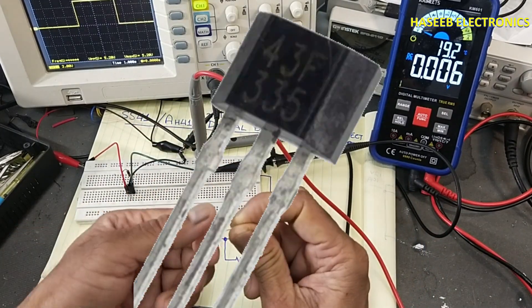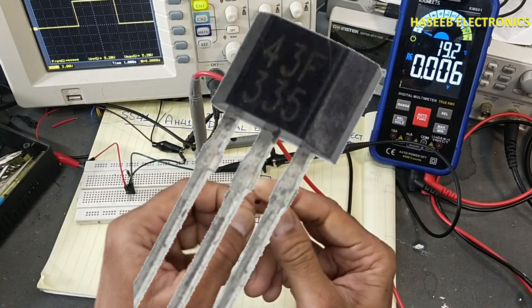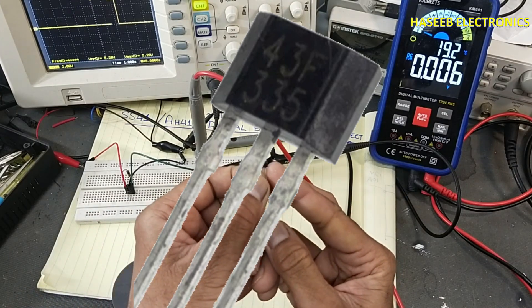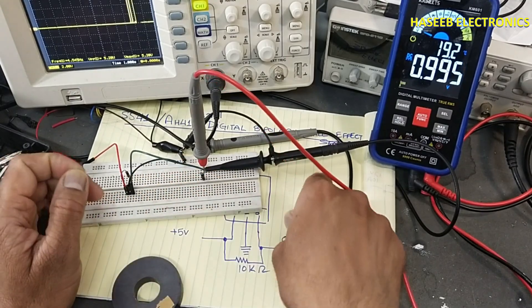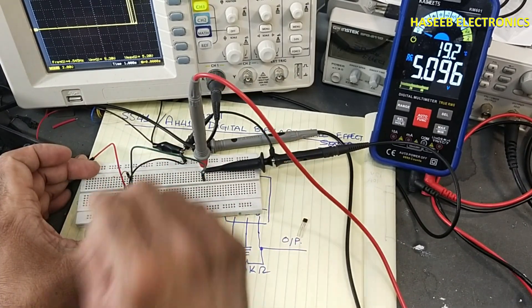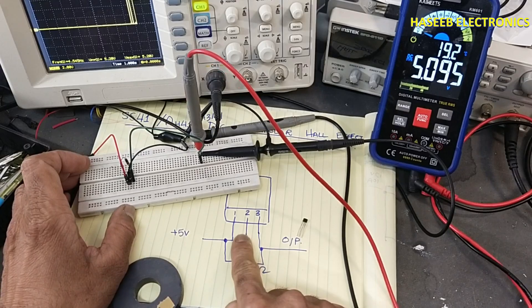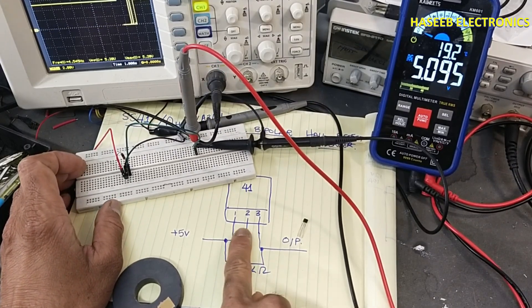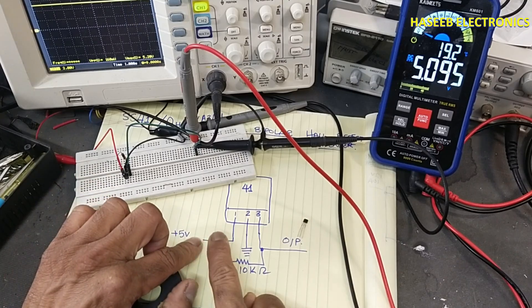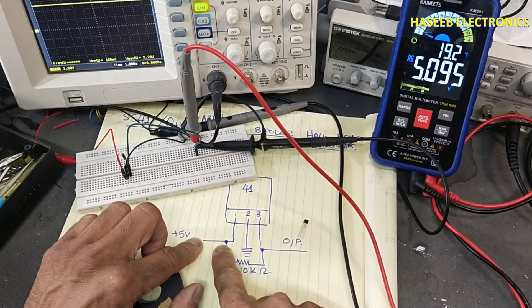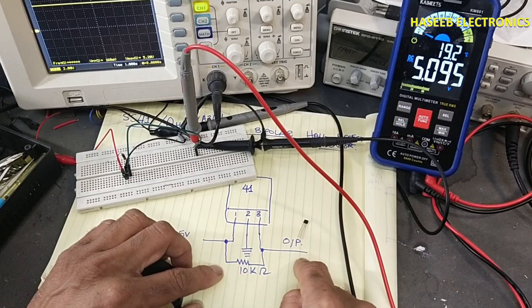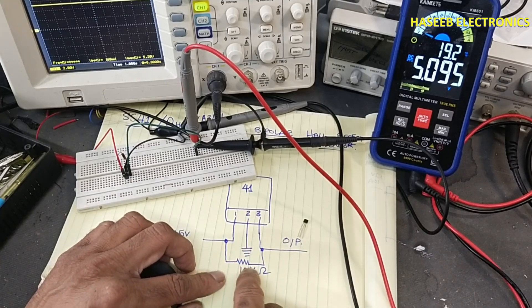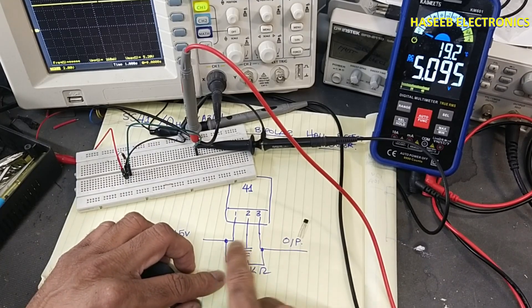But this unipolar hall effect sensor, it is SS43. Now I will install it here. Pinout is same as SS41. Pin 1 is positive 5 volt, 5 volt to 24 volt can be applied to this sensor. Pin 2 is ground. Pin 3 is output. Pull-up resistor is installed between output and positive supply voltage because it is digital output and its output is open collector.